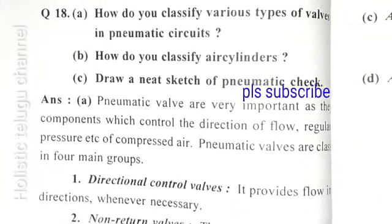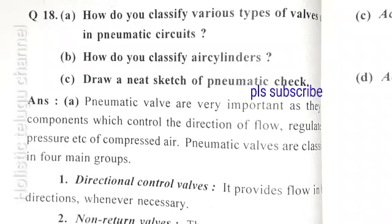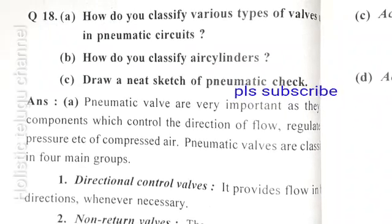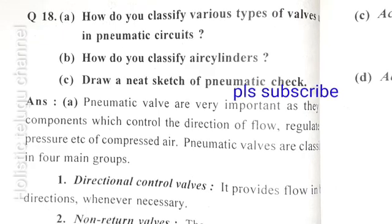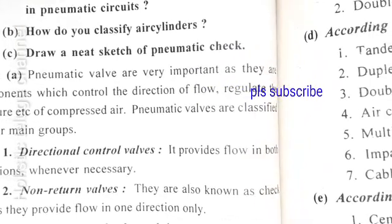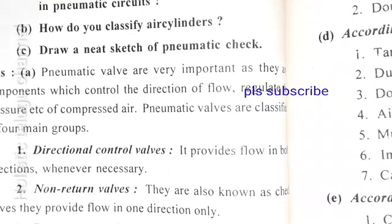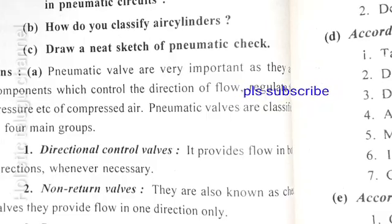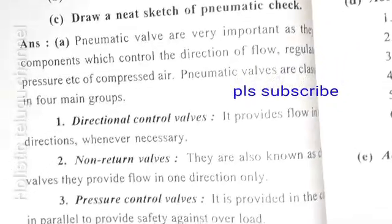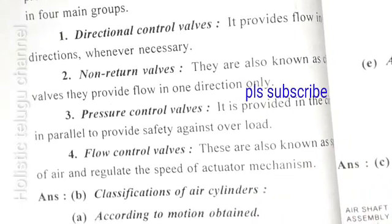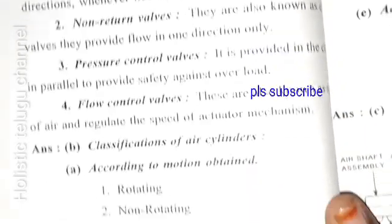Next question: how to classify various types of valves in pneumatic circuits and how to classify air cylinders? Draw a neat sketch of pneumatic check valve. Pneumatic valves are very important as they are components which control the direction of flow, regulating the pressures of compressed air etc. Pneumatic valves are classified into four main groups: directional control valves, non-return valves, pressure control valves, and flow control valves.